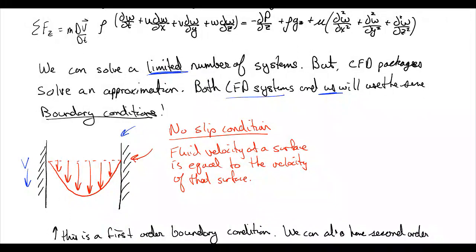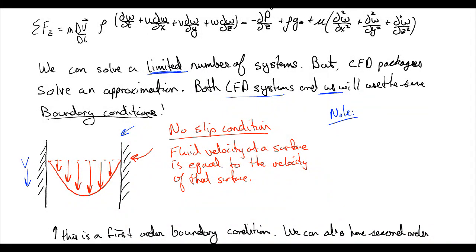Just as a side note, there are limited cases when no-slip fails. And those are rarefied gas, basically like satellites in space kind of thing, and then also very small length scales. Very small length scales. So for gases, these length scales are in the orders of less than microns and then with liquids around the order of a few nanometers. So very small length scales.